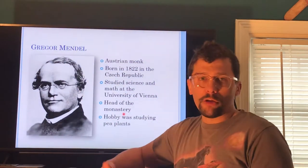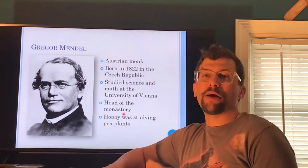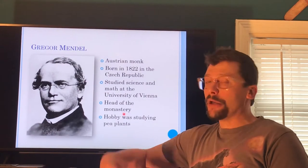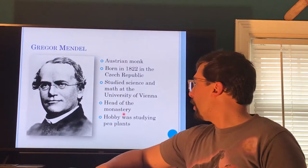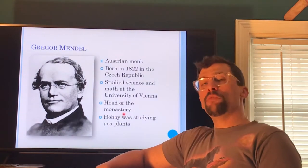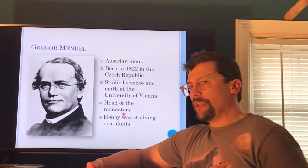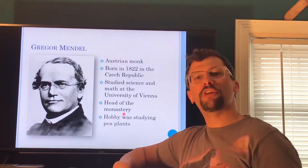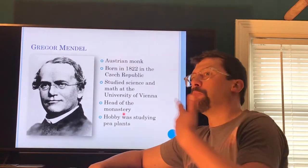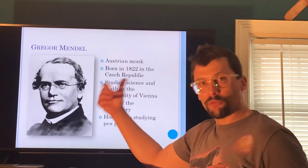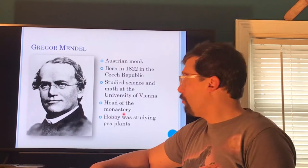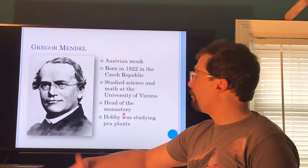The first guy we're going to talk about is Gregor Mendel. Obviously you guys learned a little bit about him yesterday with the warm-up. He was an Austrian monk, born in the Czech Republic — pretty smart guy. He went off to study math and science at the University of Vienna. He eventually ended up heading up the monastery, and he had a hobby which was studying pea plants. He had this whole little garden he would mess with and manipulate, and then he would count the results. He would apply his understanding of math to science and plant husbandry, and he basically became what we now know as the father of genetics.